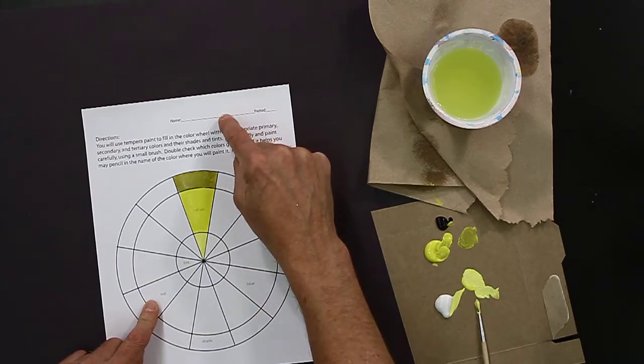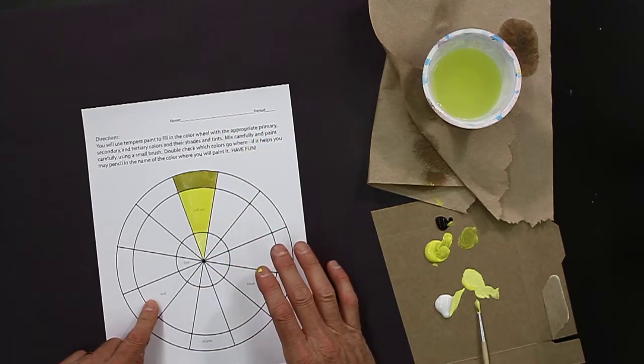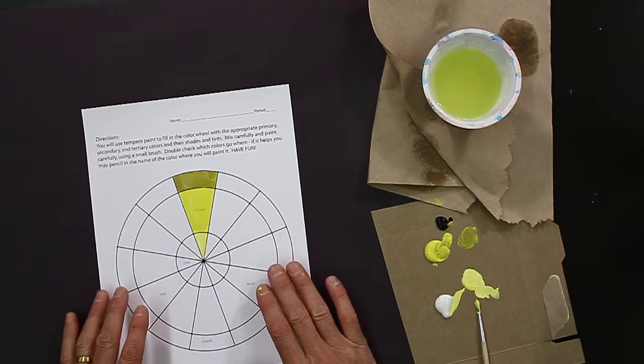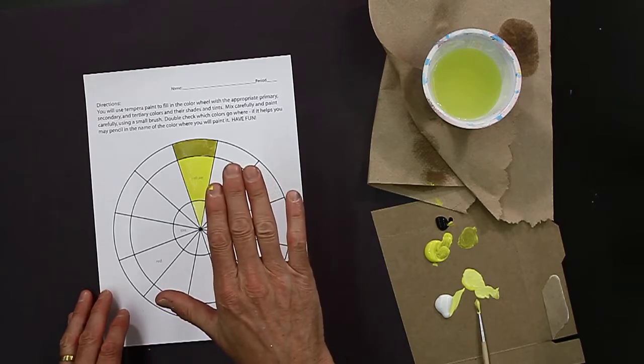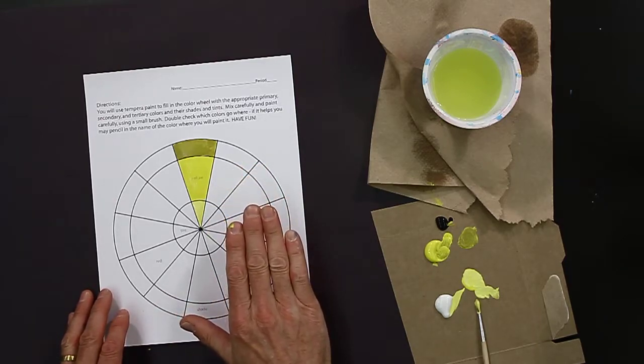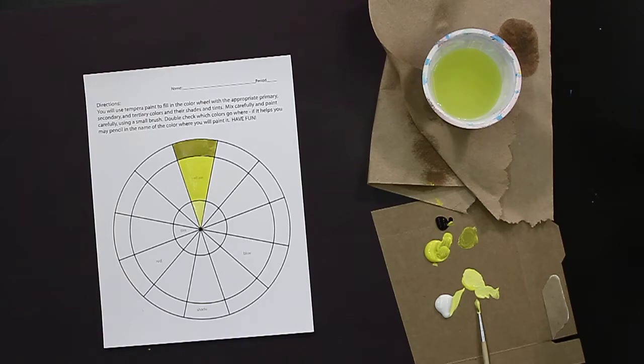Please don't forget to put your name and period number at the top because we have so many color wheels in the classroom. Many of them look very similar. We want to make sure we know which one is yours. This is going to be stored on your shelf on top of everything else. Don't slide it in underneath something and smear it. Store it on top. Handle it carefully when it's wet.